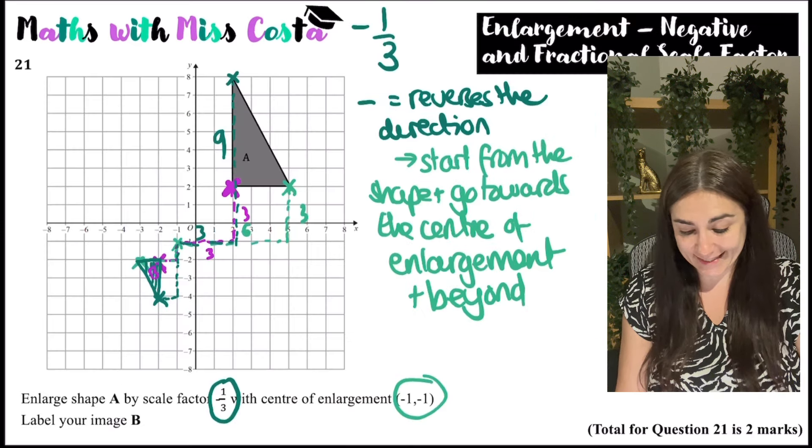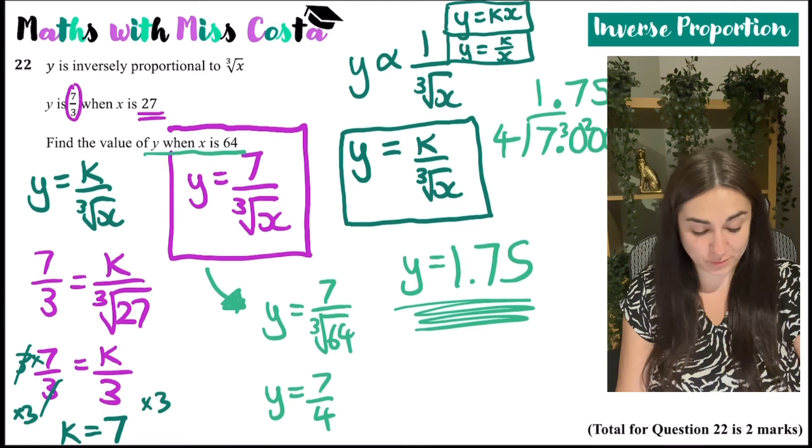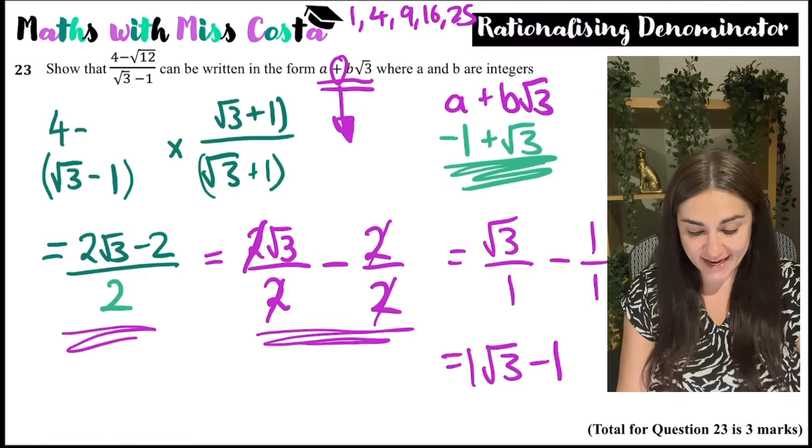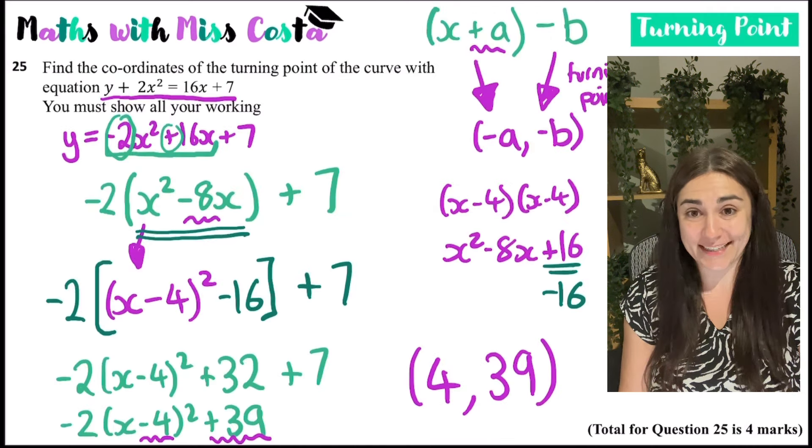Twenty-one is enlargement with a negative scale factor. Twenty-two is inverse proportion. Twenty-three is rationalising the denominator with thirds. Twenty-four is functions and the last question is turning points.